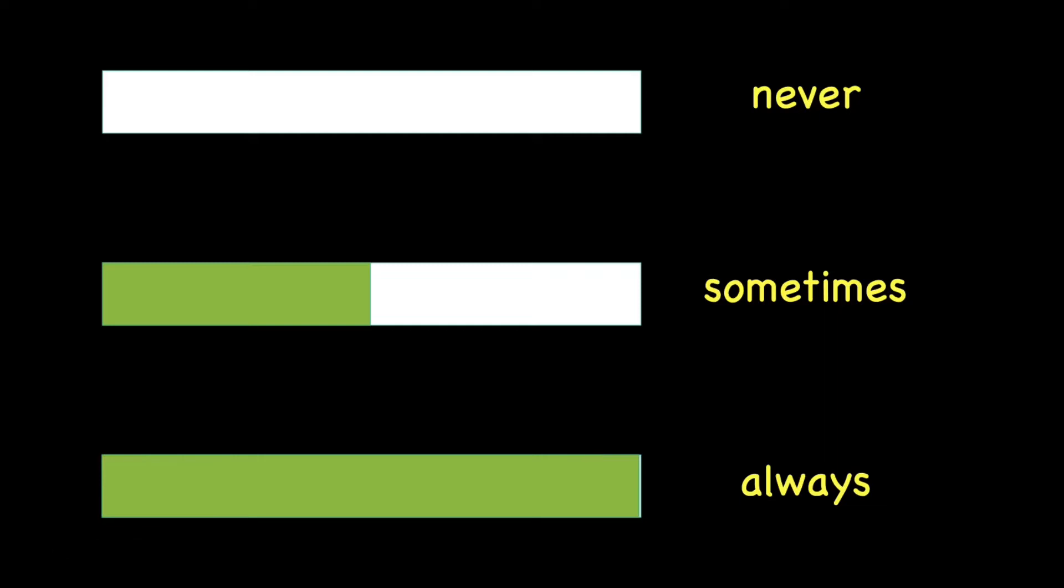Today, we are learning two more adverbs of frequency, which is seldom and often. Seldom means you do only something one or two times. So if you can see the bar, it is half of sometimes. And then often means you do something many times. If you see the bar, it is more than sometimes, but a little bit less than always.